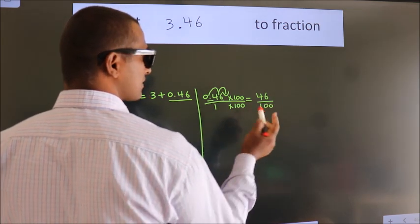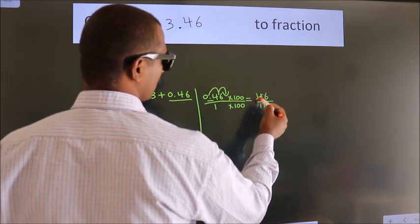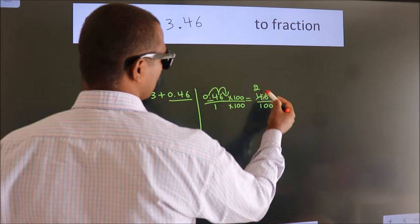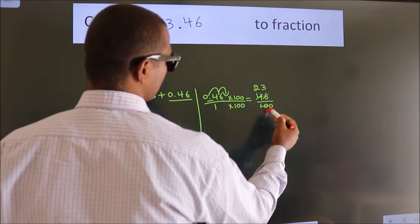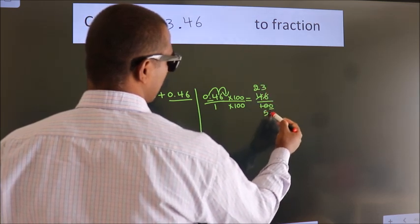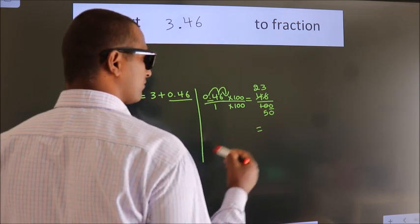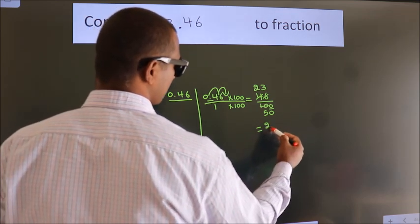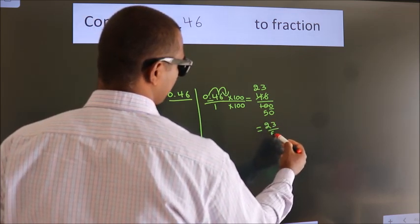Now I cancel with 2. Two 2s, two 3s, two 5s. This 0 as it is down. So the fraction we got is 23 by 50.